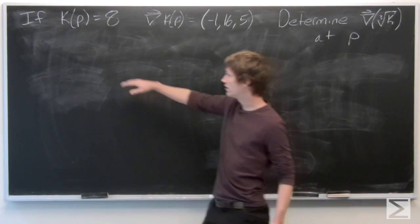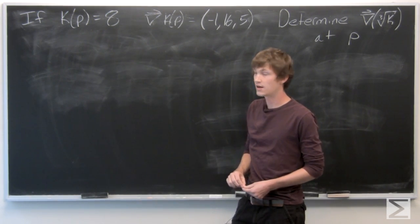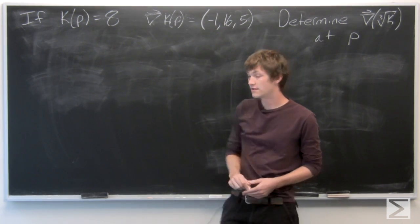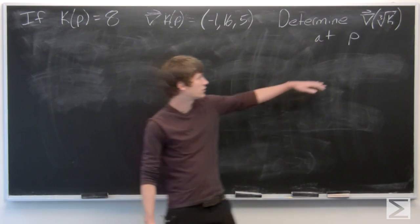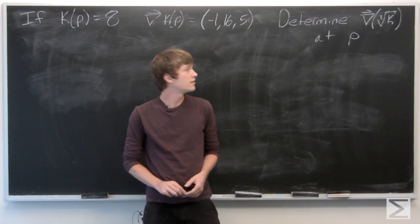OK. In this problem, we're given that k of p equals 8. The gradient vector of k of p equals negative 1, 16, 5. And we're asked to determine the gradient vector of the third root of k at p.